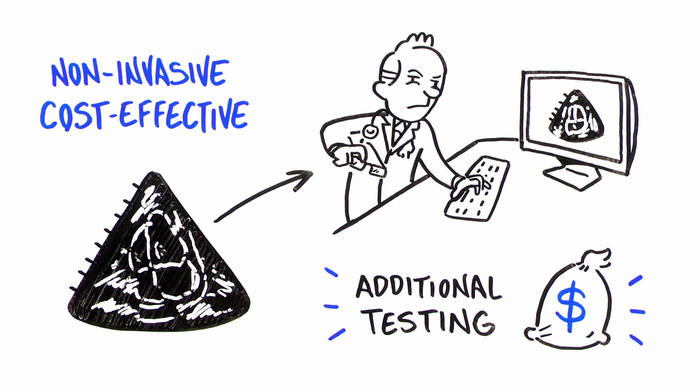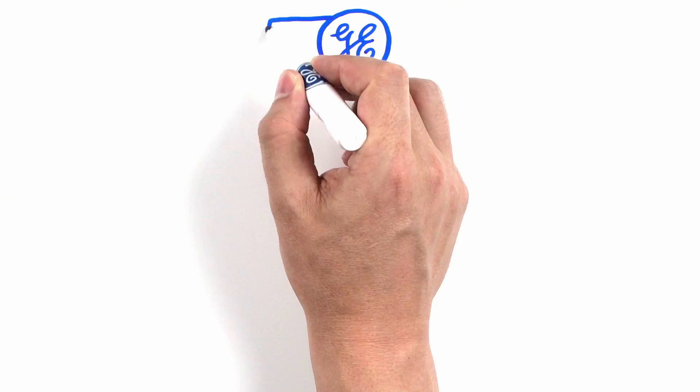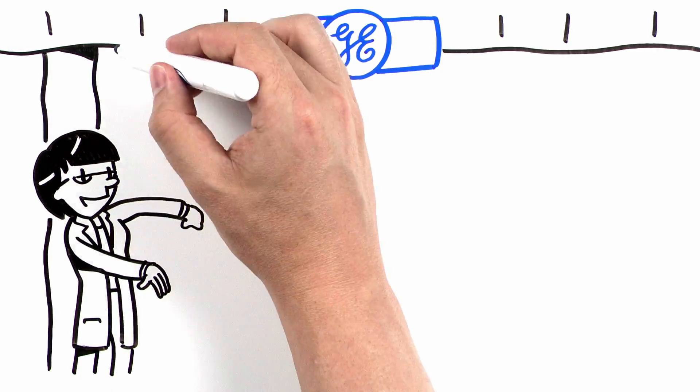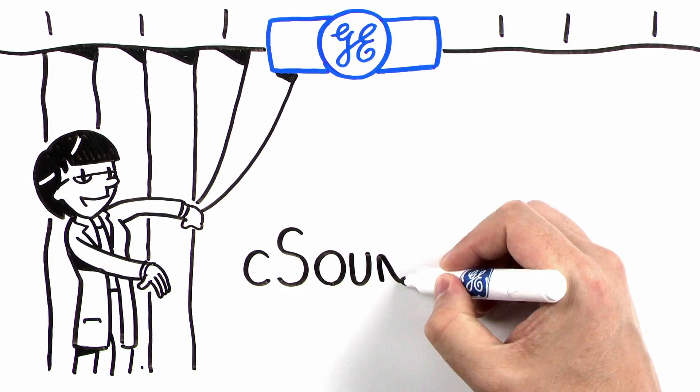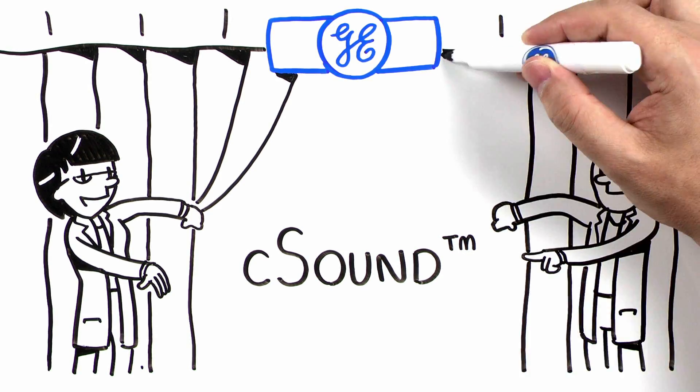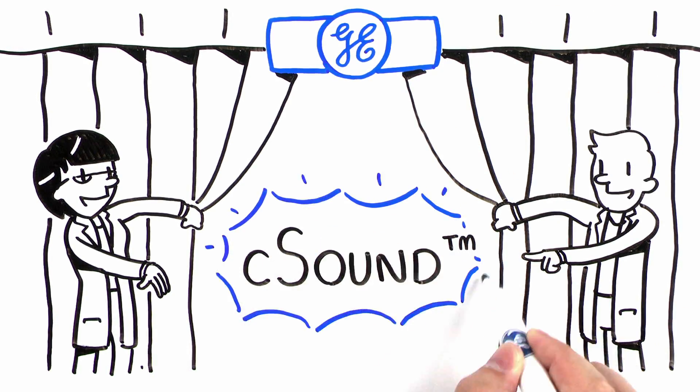Is there a better way? GE understands the pressures of delivering cardiac care in this changing healthcare environment. That's why we created C-Sound, a software beamforming platform which may help improve the image quality of transthoracic echocardiograms.